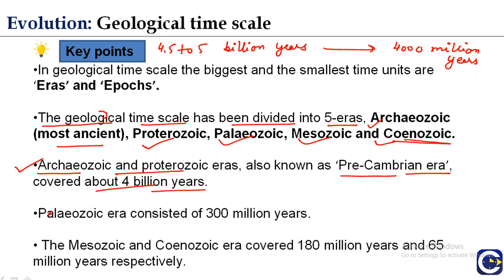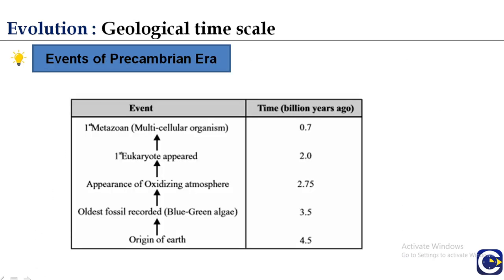These are facts from earth's history that you have to remember. The Paleozoic era consists of 300 million years, while the Mesozoic and Cenozoic eras covered 180 million years and 65 million years respectively. The geological time scale for earth life is divided into five principal eras, which are further subdivided into periods, and periods are further divided into epochs.